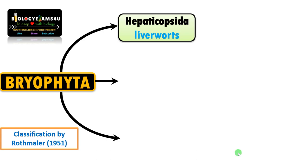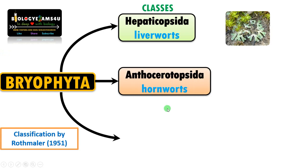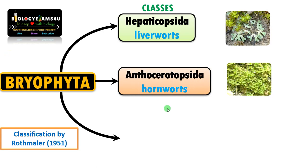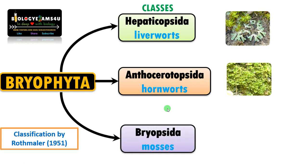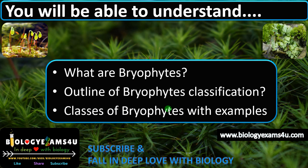Majority of the classification systems classify bryophytes into three classes. The first one is called Hepaticopsida or liverworts, the second class is Anthocerotopsida or hornworts, and the third class — the most advanced — is Bryopsida or the mosses. At the end of this discussion you will be able to understand what are bryophytes, an outline of bryophyte classification systems, different classes of bryophytes, their characteristics with examples, within five to ten minutes.